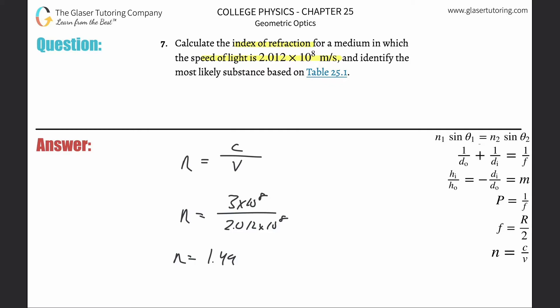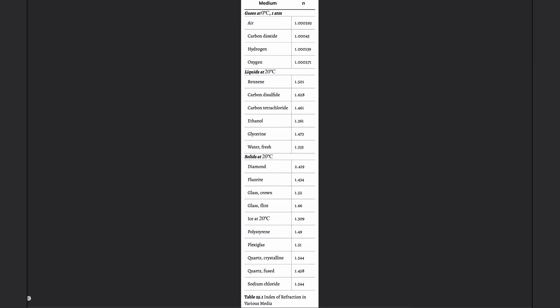All right, 1.49. So now we have to go and figure out what a likely candidate is. So let's go over here and we got to look through the table. So we got 1.49. So what do you think that might be?